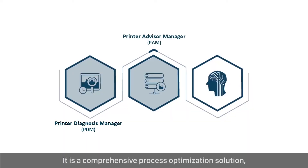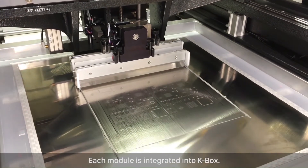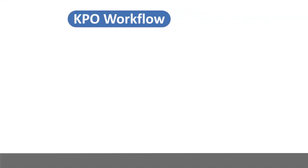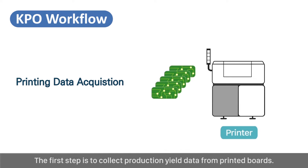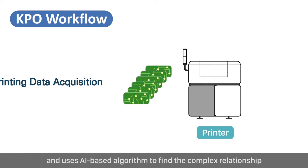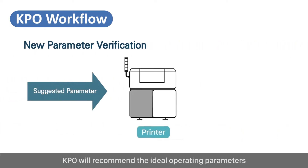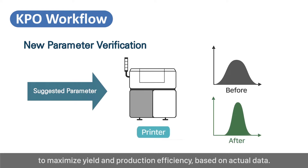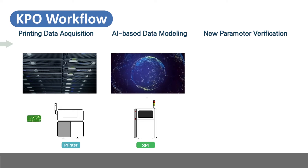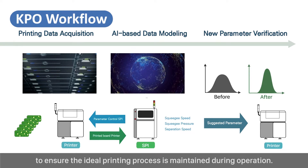KPO is a comprehensive process optimization solution comprised of three interlinking modules, each integrated into KBOX. The first step is to collect production yield data from printed boards. KPO captures these printing results in real time and uses an AI-based algorithm to find the complex relationship between key printer parameters and printing quality. KPO will recommend the ideal operating parameters to maximize yield and production efficiency based on actual data. KPO also facilitates communication between the SPI and printer to ensure the ideal printing process is maintained during operation.